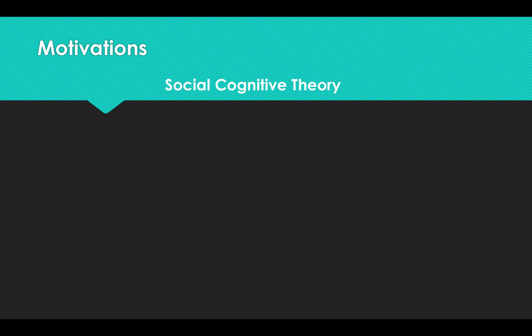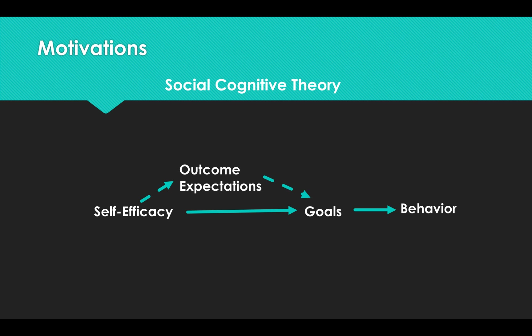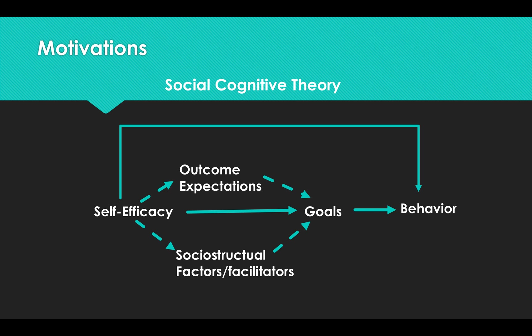To understand how to improve self-efficacy clinically, psychological theories like social cognitive theory can be helpful. Self-efficacy is seen as a central tenet of achieving specific goals that later become integrated into your everyday life. Outcome expectations modify these goals, and socio-structural factors and facilitators also modify these goals. But sometimes self-efficacy can be strong enough that it overrides these mediators.